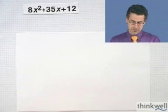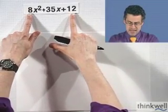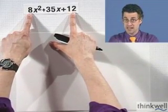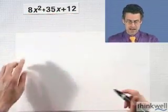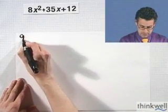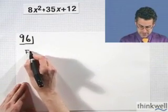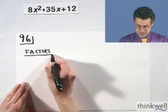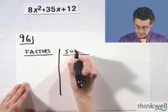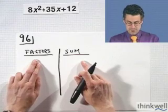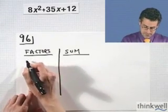And now what I have to do is I have to think of two numbers whose product is the product of 8 times 12, which is 96, and yet whose sum equals 35. So I've got to factor 96. So here's 96. And I want to write the factors that's going to generate 96. And then I want to write down the sum of those factors. And I want to find a place where I see 96 here and the sum being 35.